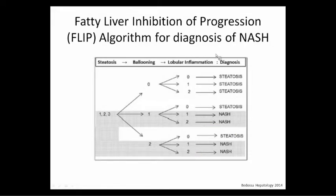That's why you can't just use the NAFLD activity score alone to say whether it's NASH or not. You could have a score of five with three in steatosis, two in inflammation, and no ballooning — and that's really just fatty liver, not NASH. It's a gestalt based on pathology.